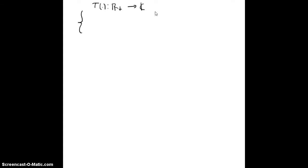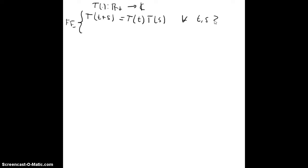Suppose that we want to find all maps f on t that go from positive reals to complex numbers satisfying the functional equation f(t+s) = f(t)·f(s), for all t, s greater or equal to 0, and also that f(0) = 1.